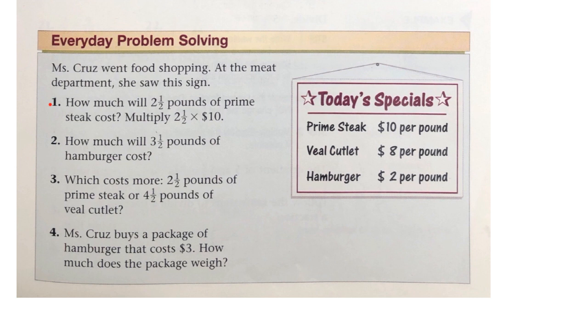How much will 2 and a half pounds of prime steak cost? Well, it's $10 per pound. She wants 2 and a half pounds. 2 and a half times 10. So we can make 2 and a half into an improper fraction by going 2 times 2 plus 1. 2 times 2 is 4. Plus 1 is 5. 5 over 2.